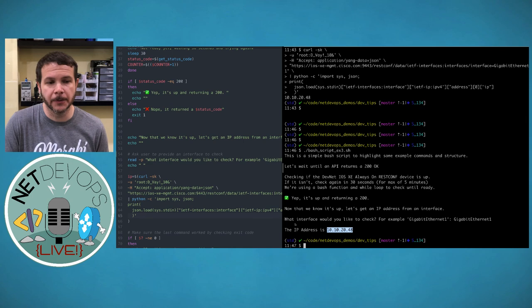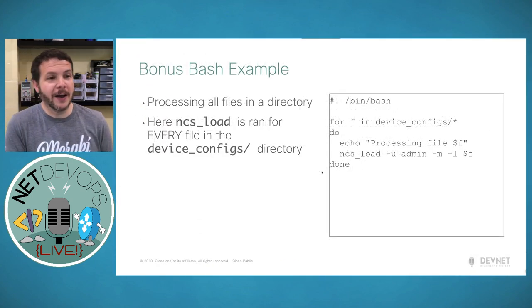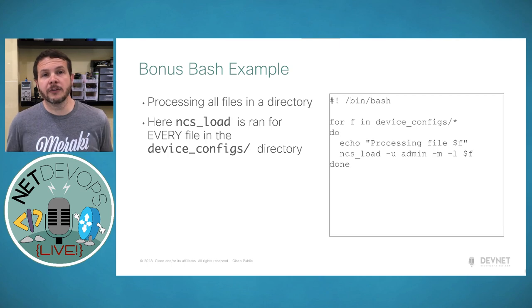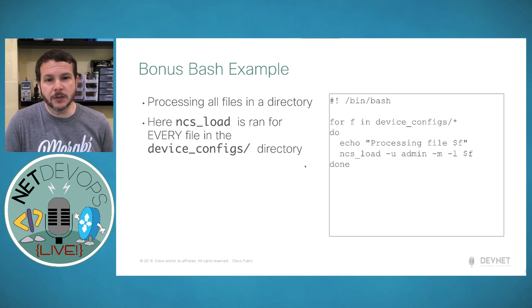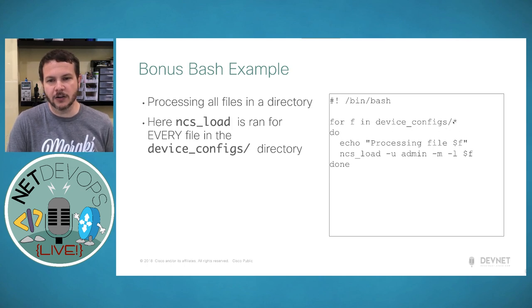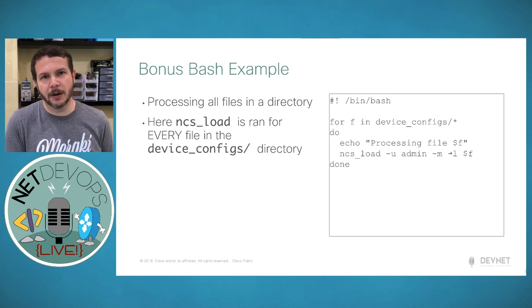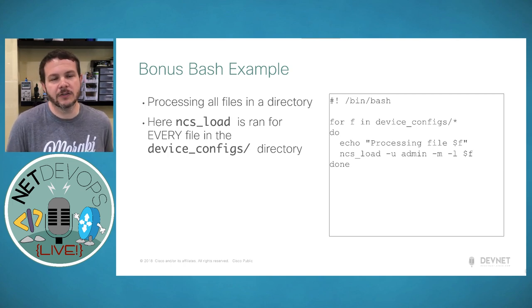One final bonus bash tip: processing all files in a directory. Using a for loop — 'for f in device_configs/*; do ncs_load -u admin -m merge -l $f; done' — this loads all configuration files into Cisco NSO without needing to know filenames or count. A simple bash for loop is a powerful way to process an entire directory of files.